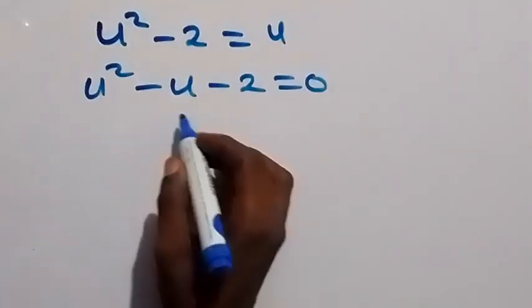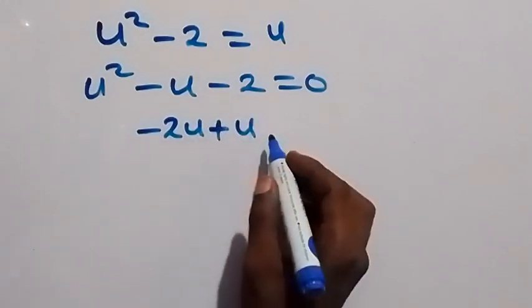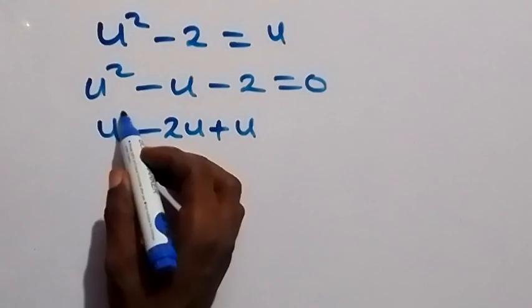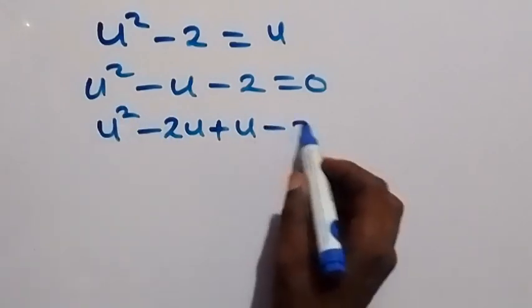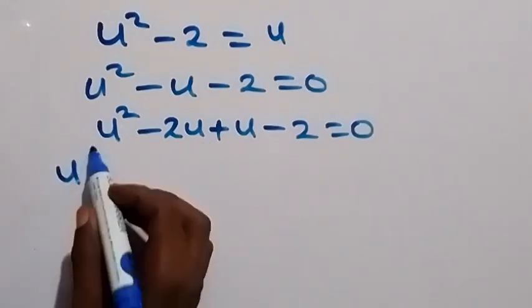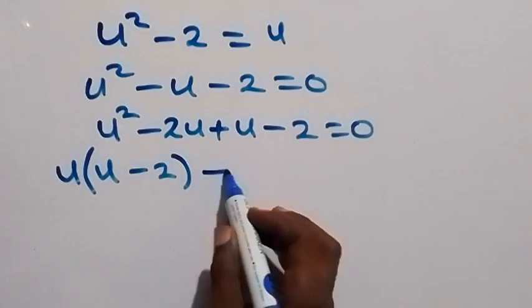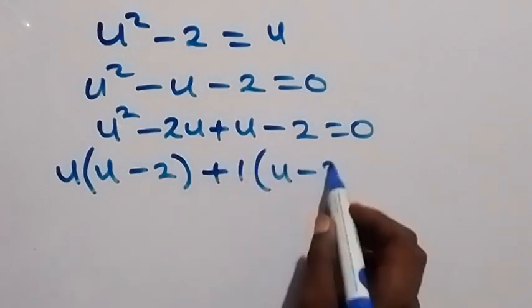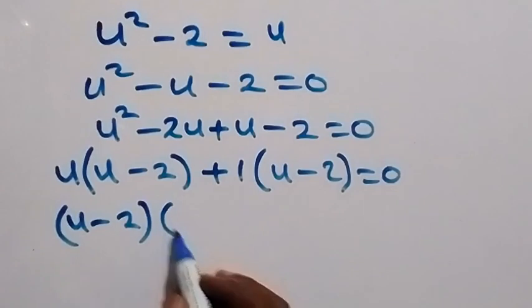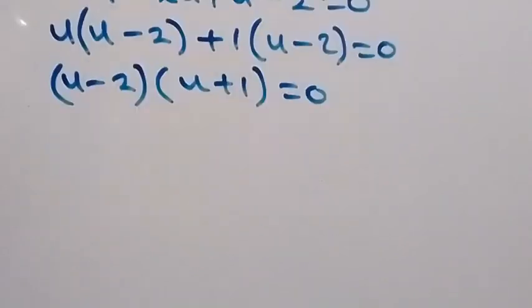We factorize this quadratic: minus u becomes minus 2u plus u, and we group as u squared minus 2u plus u minus 2 equals to 0. What is common in the first pair is u, factoring out gives u(u minus 2). What is common in the second pair is plus 1, giving plus 1(u minus 2), so (u minus 2)(u plus 1) equals to 0.